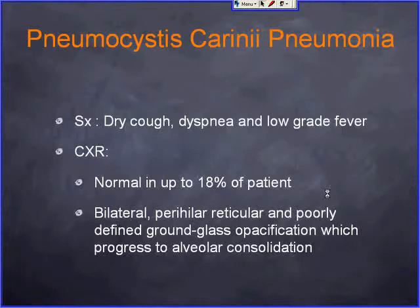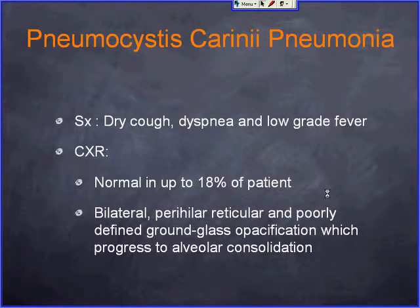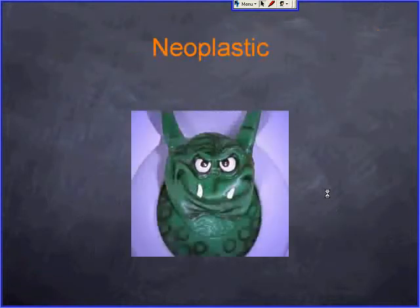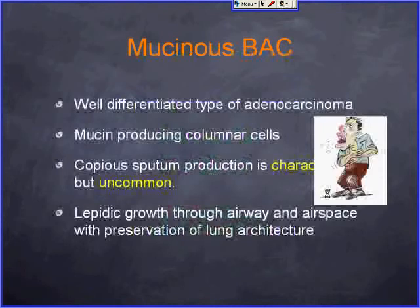On chest X-ray, almost 18% of patients will be normal initially. Within three to four days they will develop bilateral perihilar, reticular, poorly-defined ground glass opacification, and then consolidation.